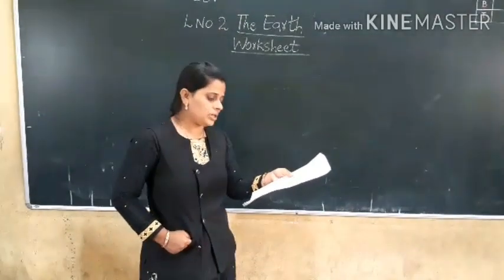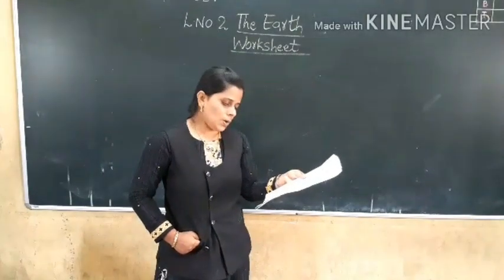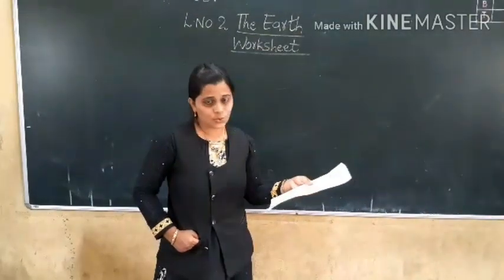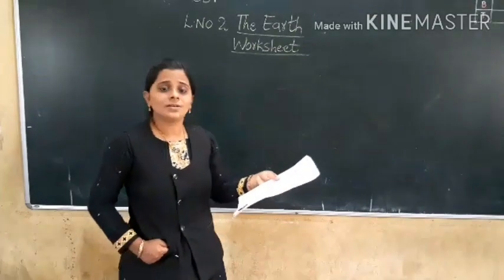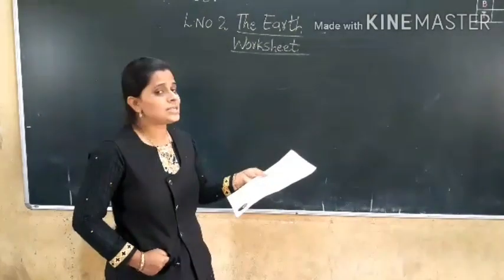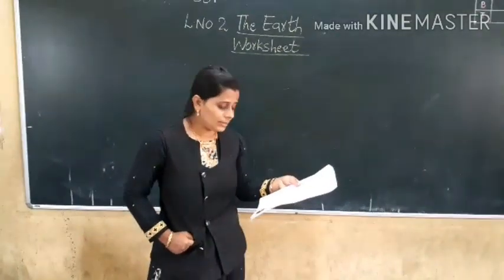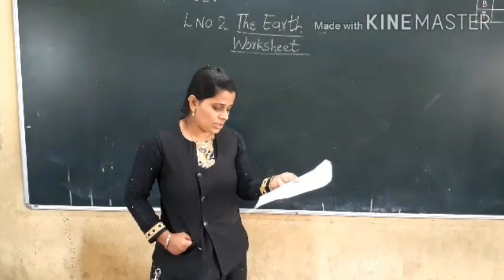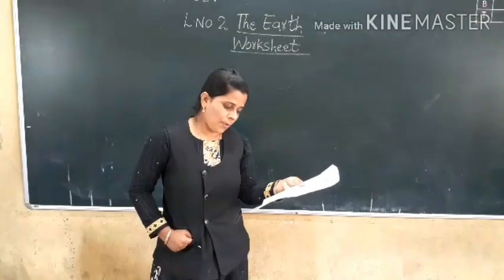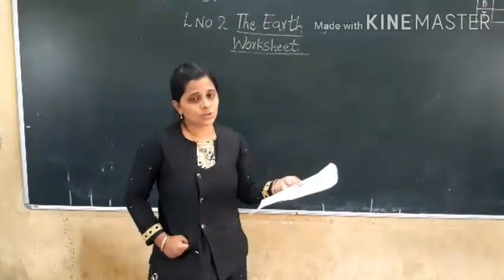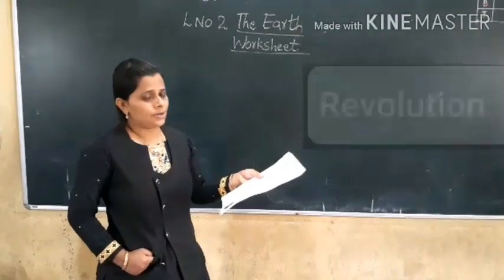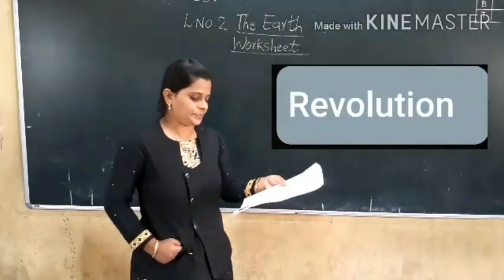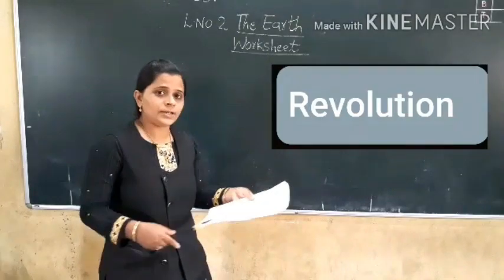Now the fifth one: Seasons are caused by this movement of the Earth. What causes the seasons? The options are: vertical, rotation, revolution, horizon. The correct answer is revolution. Done.